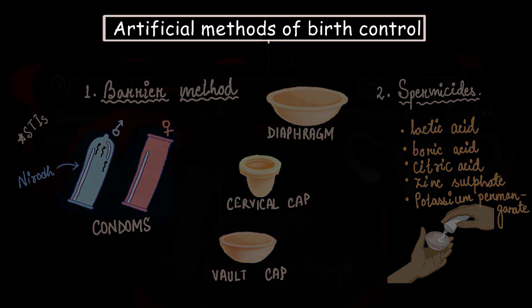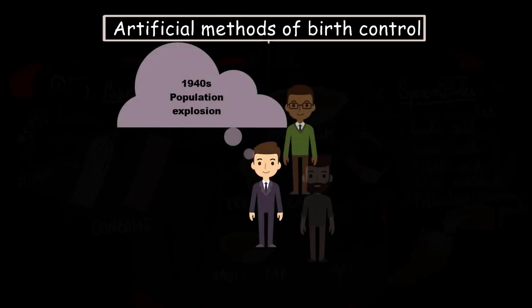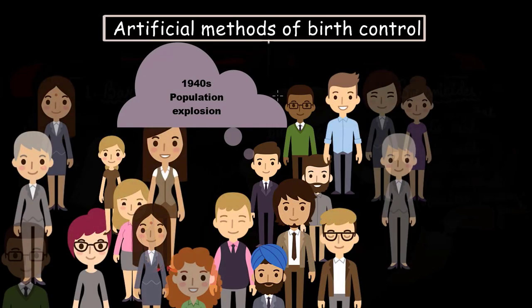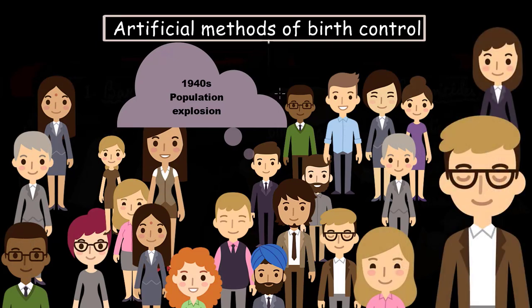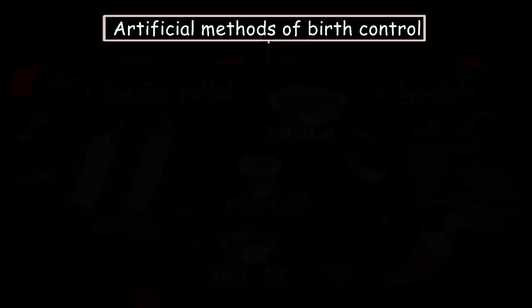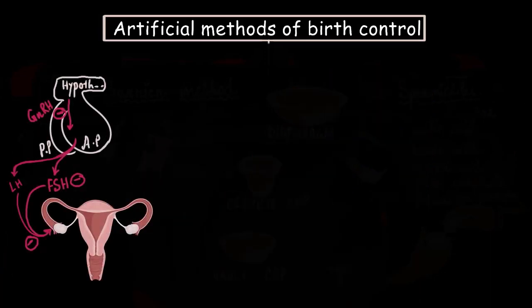But before we do that, let me tell you that I was really curious to know why there is a need for another birth control method when there are already condoms and spermicides out there in the market. Well, when I looked up, I found that back in the 1940s, the world population kind of exploded and the scientific community back then wanted a more effective and more powerful type of contraception. And that is how a few more got created. So rather than just jumping into the name of that birth control method, let me give you a backstory of how that birth control method came into existence.